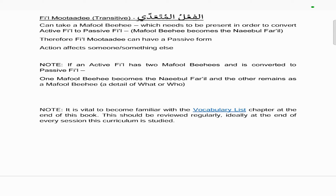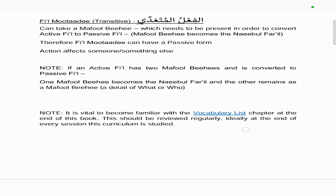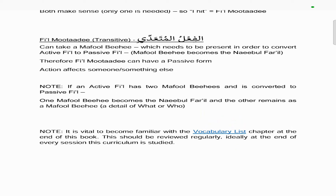Moving on to the Fi'l Muta'addi, which is the transitive. It can take a mafool bihi, which needs to be present in order to convert an active fi'l to a passive fi'l, because the mafool bihi becomes a na'ib ul-fa'il. Therefore, a fi'l muta'addi can have a passive form, meaning the action affects someone or something else. We also note that if an active fi'l has two mafool bihis and is converted to a passive fi'l, one mafool bihi becomes the na'ib ul-fa'il, and the other remains as a mafool bihi — a detail of what or who.